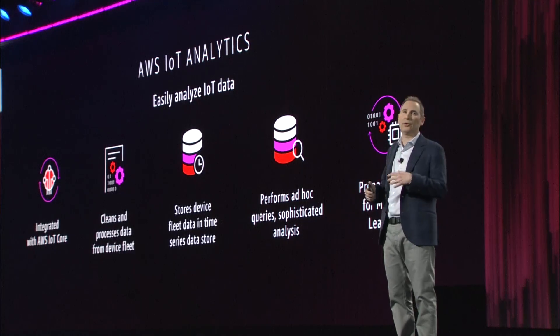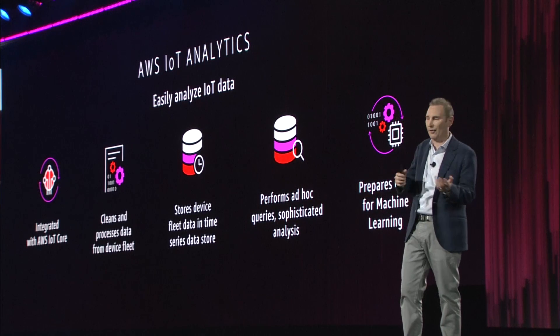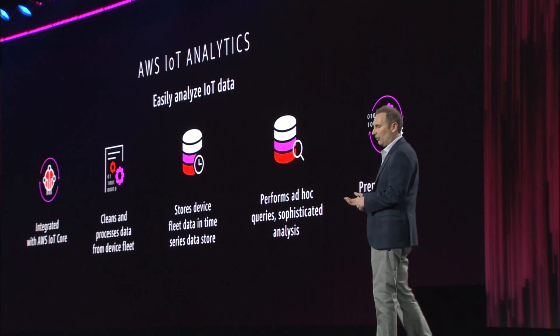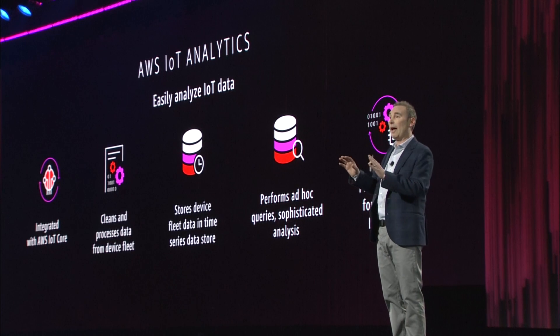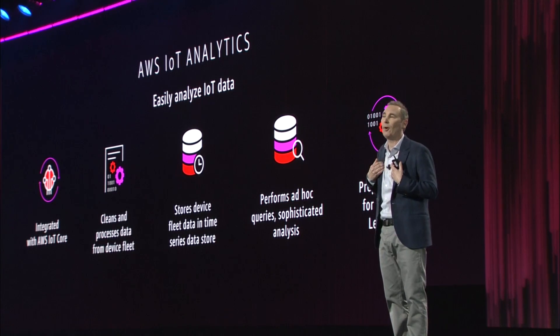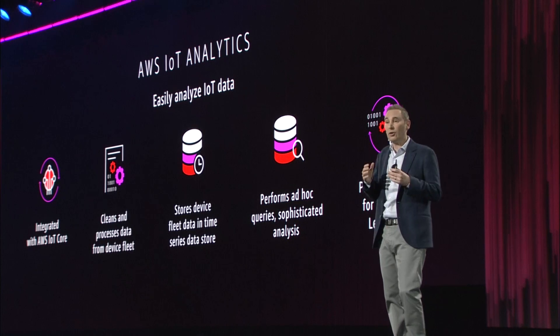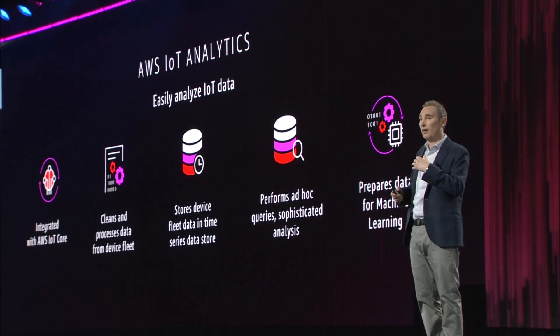You can configure AWS IoT Analytics to enrich your data. You can do transformations — for example, transform from Celsius to Fahrenheit. It lets you build conditional statements and do message filtering. And then you can store that data that's enriched, filtered, and transformed — what we call processed data. You can also store the data raw in case you want to do another round of enriching, filtering, and transforming later.